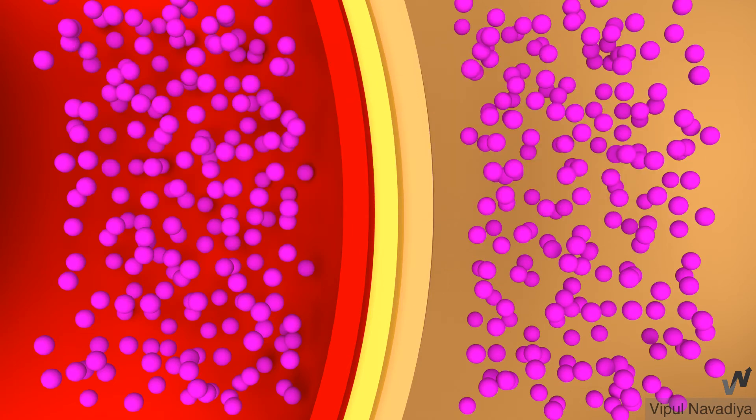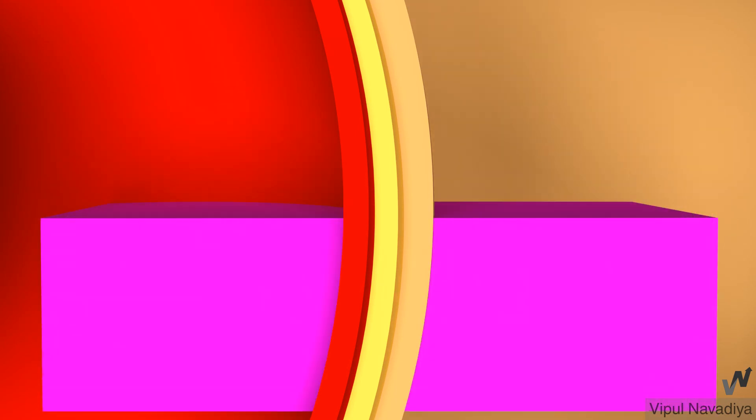Now it is difficult to compare concentration of both the sides if I show all the solid particles separately. So only for ease of comparison, we will assume that particles are settled down. By doing so, we can compare concentration simply by comparing height of the sediment. Here you can see that height of the sediment on both the sides is same, suggesting equal concentration on both the sides.